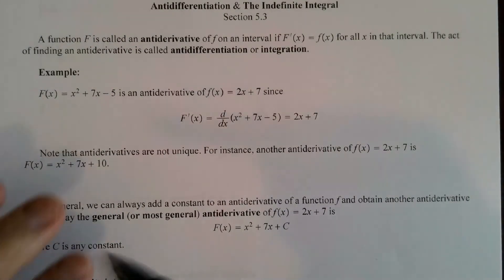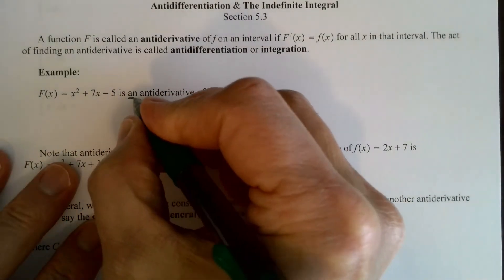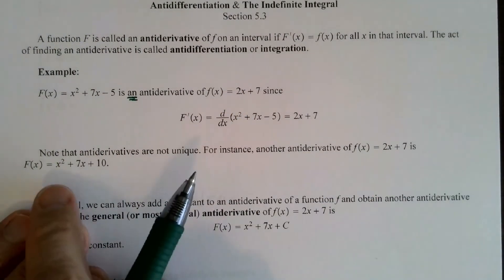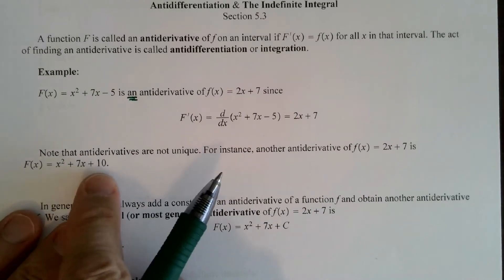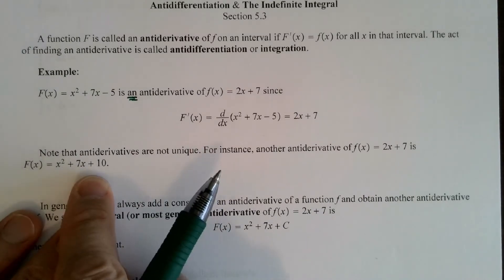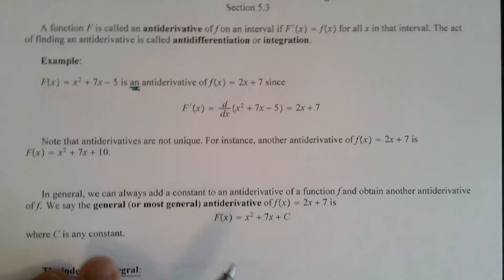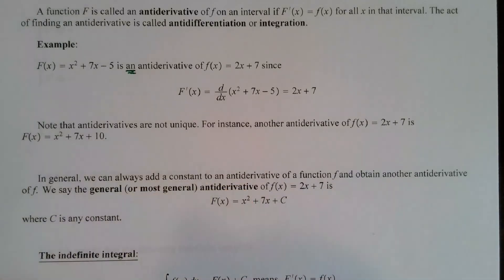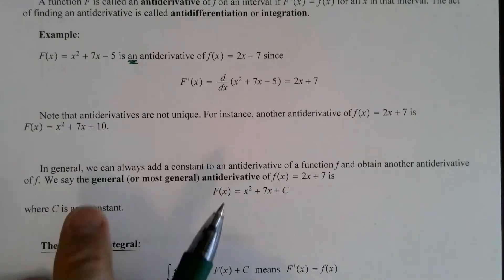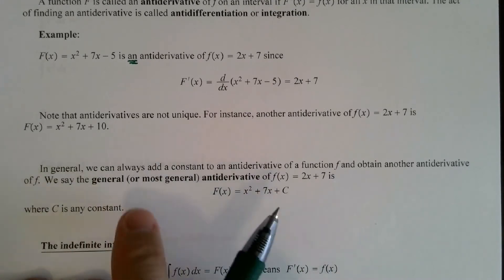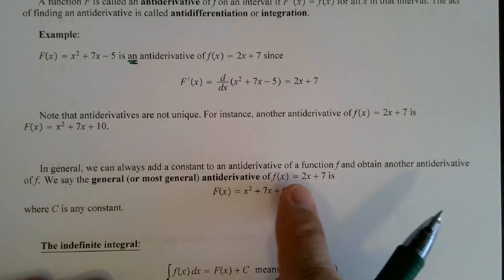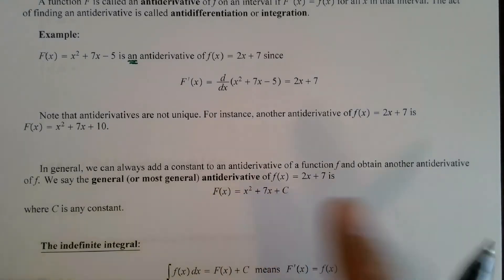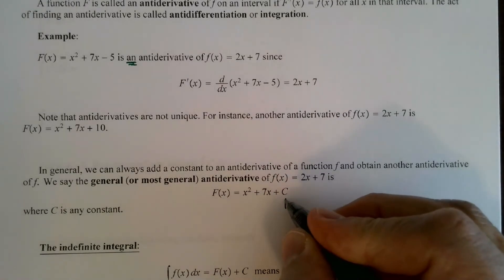Notice I say an anti-derivative — not the anti-derivative — because anti-derivatives are not unique. Another anti-derivative of 2x plus 7 is x squared plus 7x plus 10. If you take the derivative of that, you get 2x plus 7. It doesn't matter what the constant is. In general, we can always add a constant to an anti-derivative and obtain another anti-derivative.